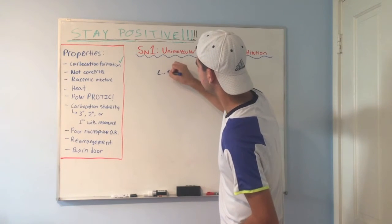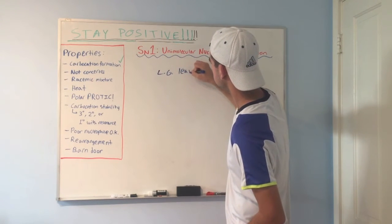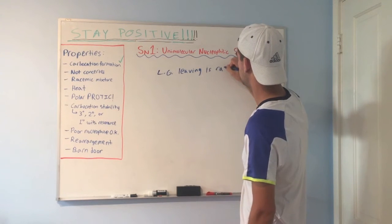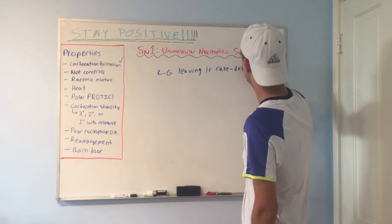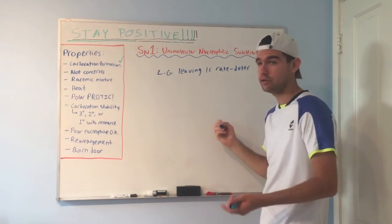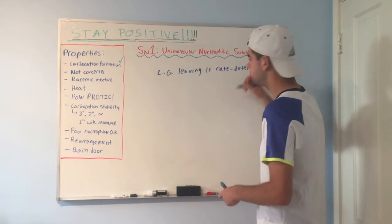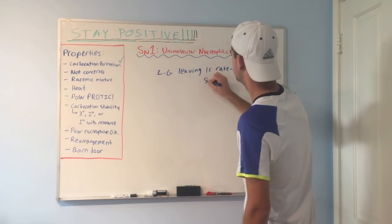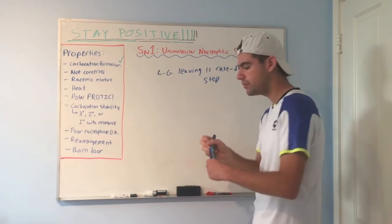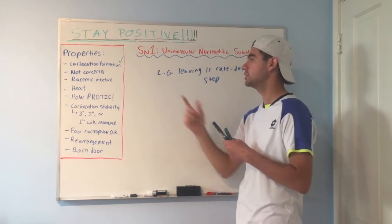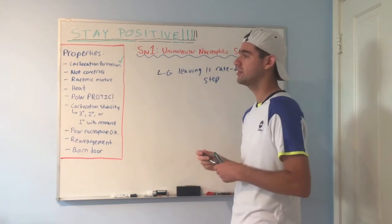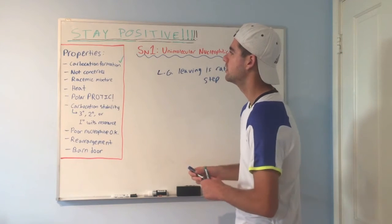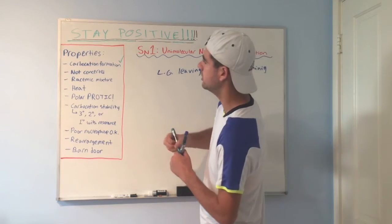So leaving group leaving and forming the carbocation is rate-determining step. It has the highest activation energy of any step that I listed. Rate-determining step. And that's why we need heat. We need heat in SN1 reactions for that step, specifically. Because carbocation is really unstable and hard to make. So we've talked about not concerted. Good.